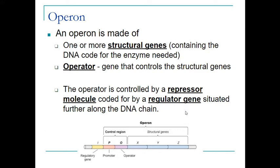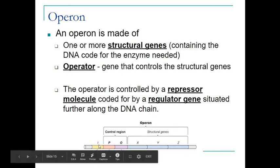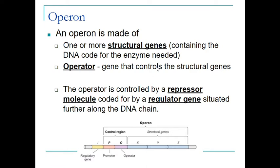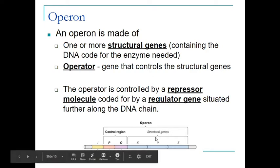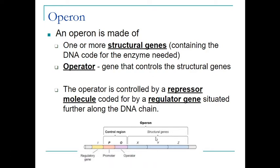If we look at the diagram at the bottom, we can see we have a regulatory gene to the left. We have the operator here, which is part of the control region, and we have the structural genes. The structural genes contain the code for the enzyme that is needed, for example beta-galactosidase to break down lactose.